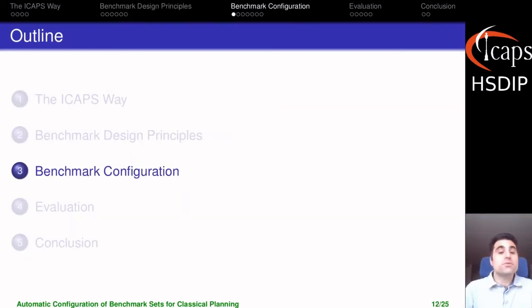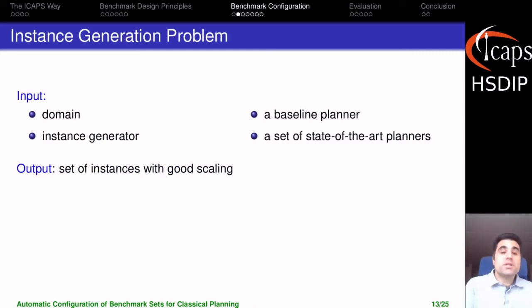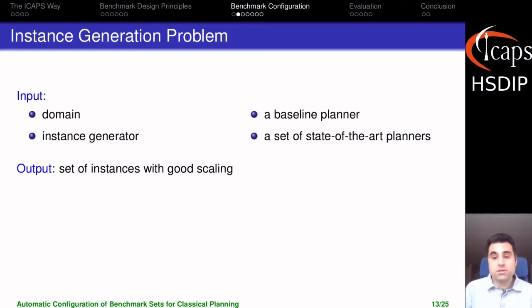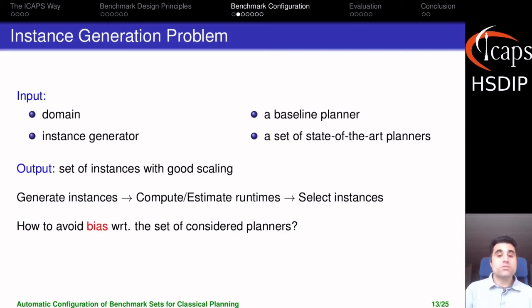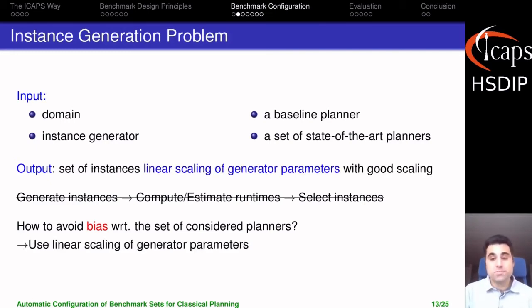So how do we do this benchmark configuration? We take as input a domain and an instance generator to generate the instances, and a baseline and a set of state-of-the-art planners to evaluate whether instances are easy or hard, and we output a set of instances with a good scaling. One approach would be to generate instances, run the planners on them to obtain runtimes, and select instances with the desired runtimes. However, this could introduce a lot of bias with respect to the considered planners. To reduce this, we follow the same approach as IPC organizers did in the past, which is to consider linear scaling of the generator's parameters.